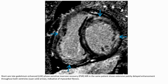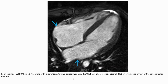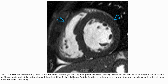On T2-STIR (fat-suppressed inversion recovery), extensive subendocardial late gadolinium enhancement suggests a pattern of myocardial fibrosis. On these MRI images, characteristic bi-atrial dilatation without ventricular dilatation is seen. Moderate myocardial hypertrophy of both ventricles with restrictive cardiomyopathy from myocardial infiltration or fibrosis leads to diastolic dysfunction with impaired filling and bi-atrial dilatation. Systolic function is maintained.